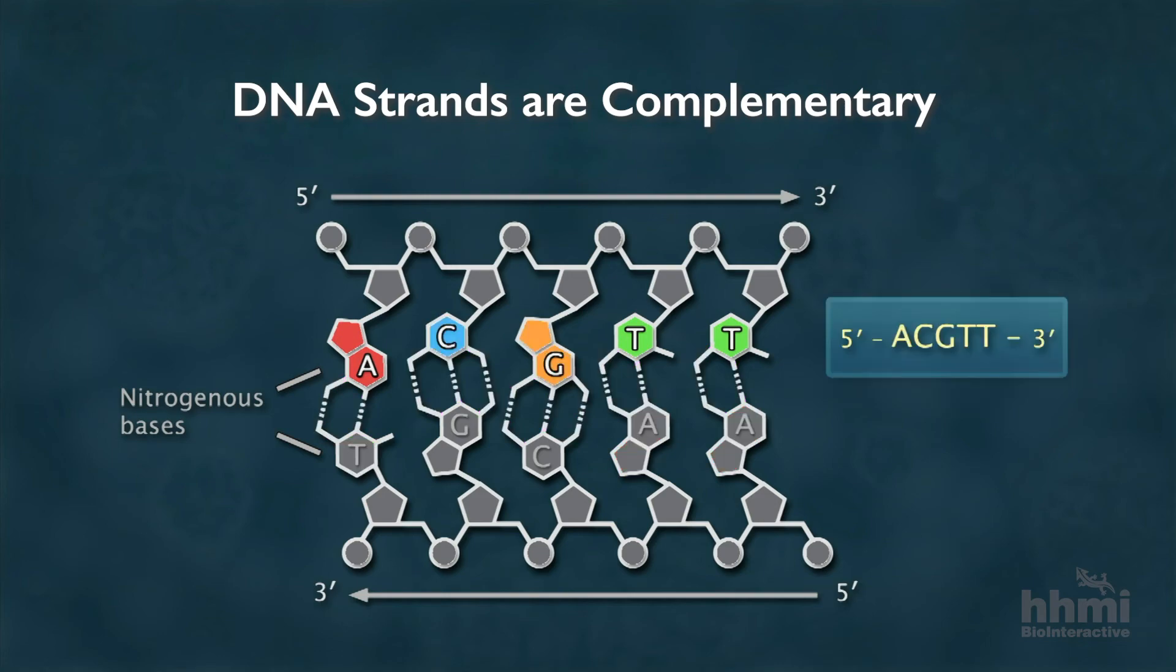For example, this top strand has the sequence A, C, G, T, T when read in the five prime to three prime direction.